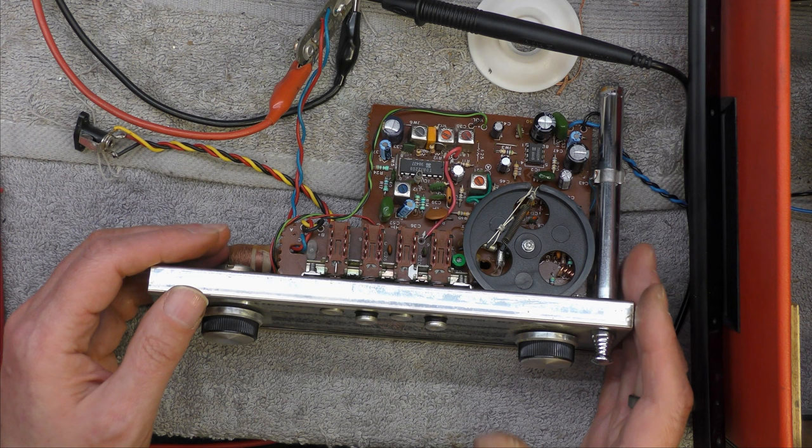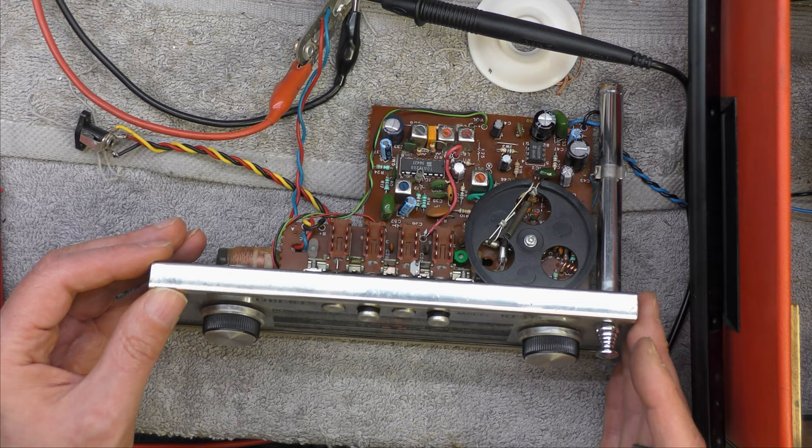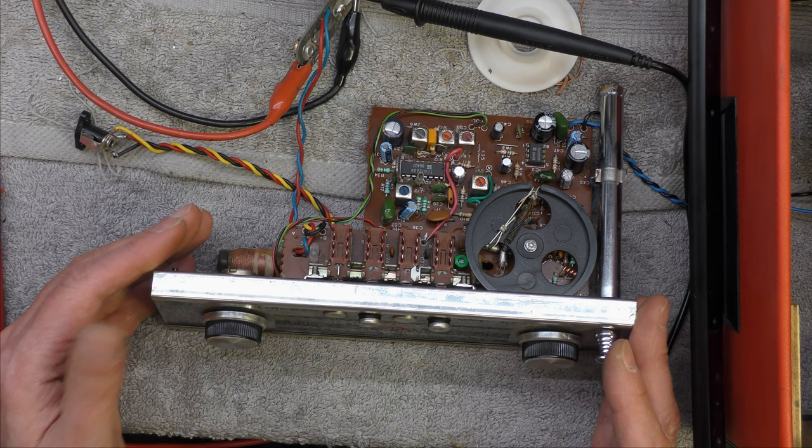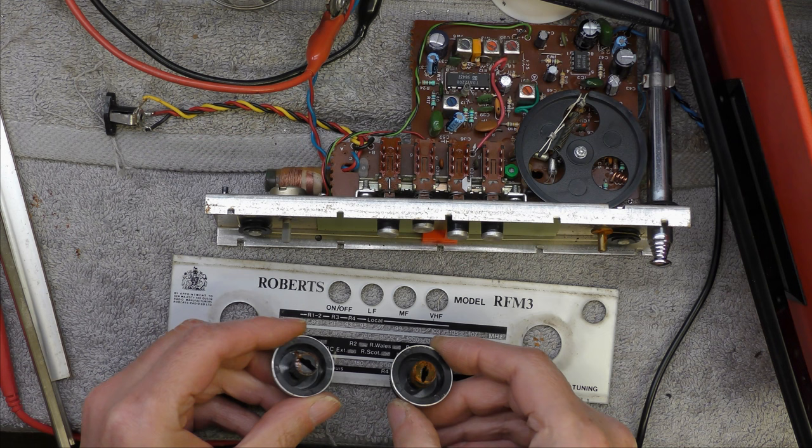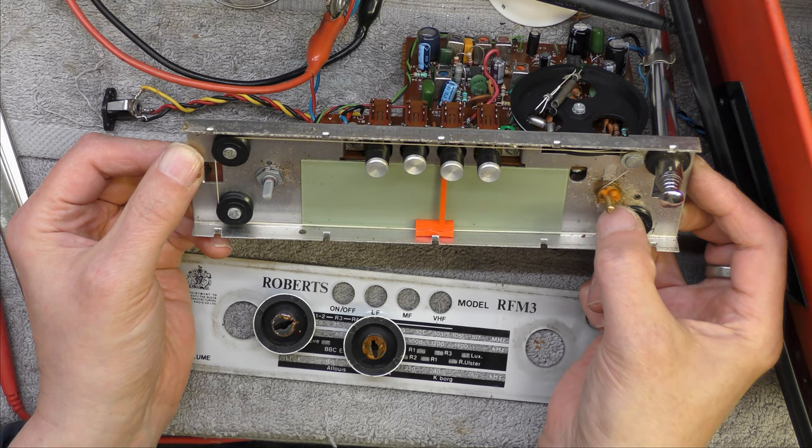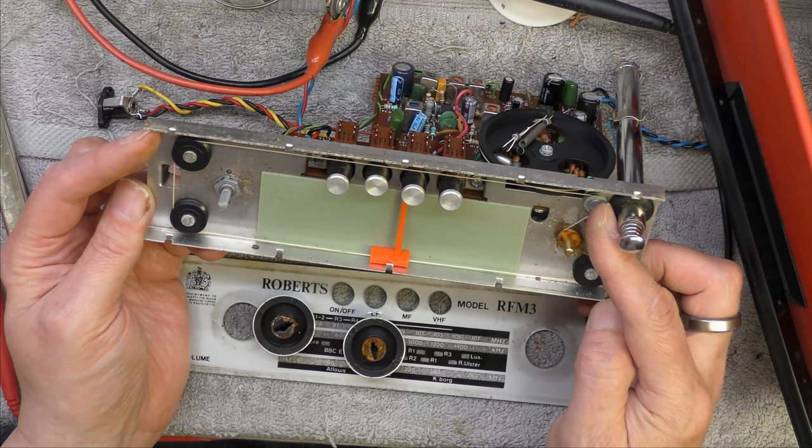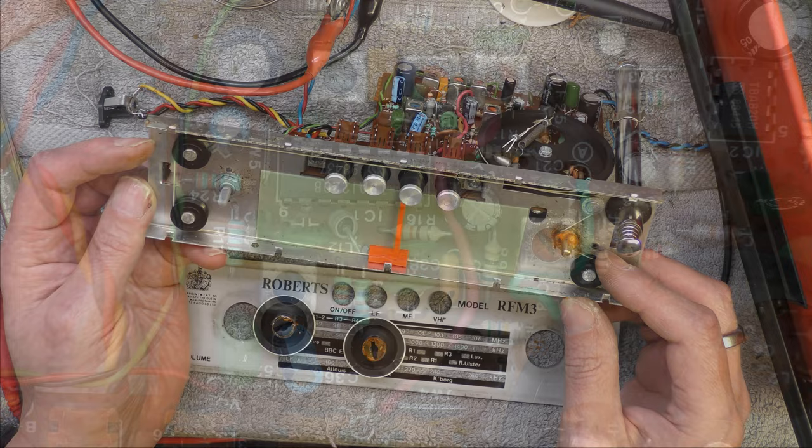But, yeah. Well, I was hoping this would be a nice simple repair because everything I've tackled recently has been quite complicated. And, this is the first Roberts radio I have worked on. So, I've popped my Roberts Virginity there. You can't help thinking this radio has got very damp at one stage, can't you? It's like rust on it. Oh, I like that. That's nice and simple design. The tuning scale.